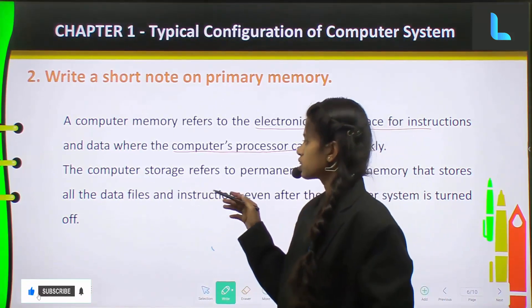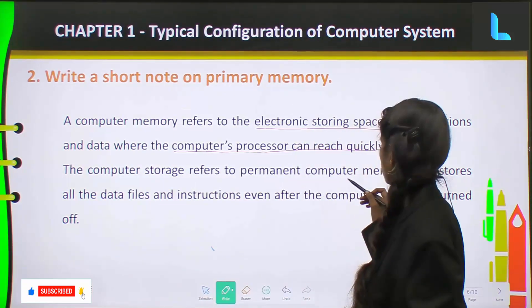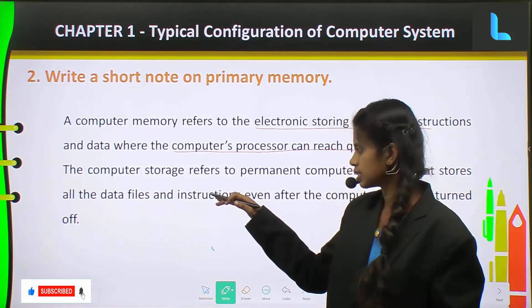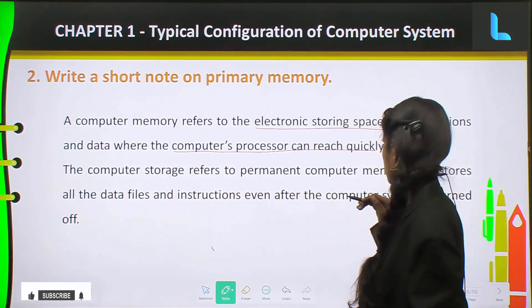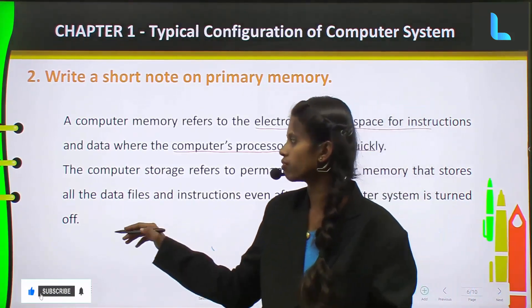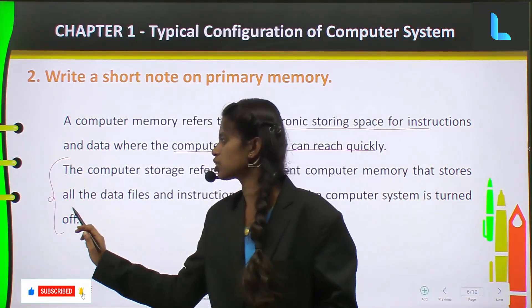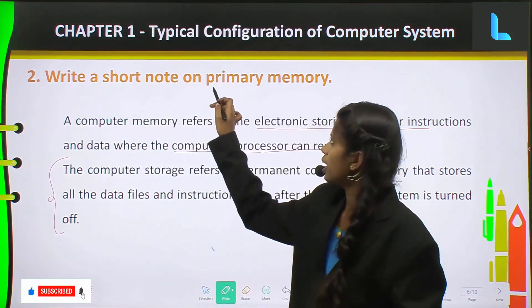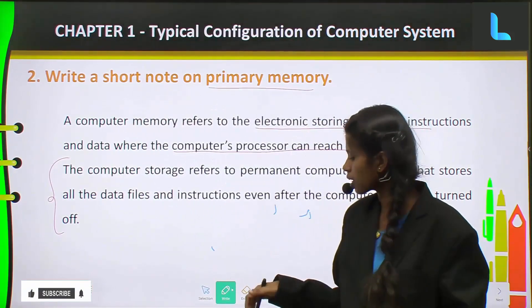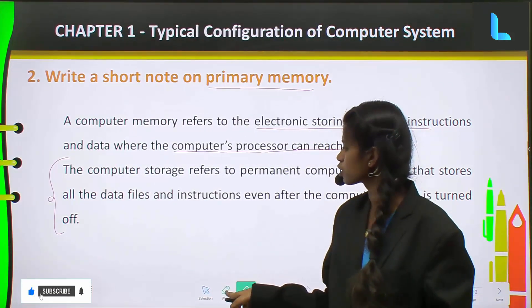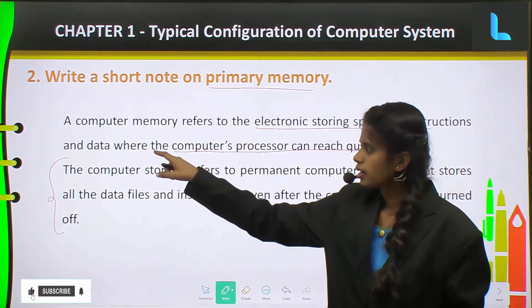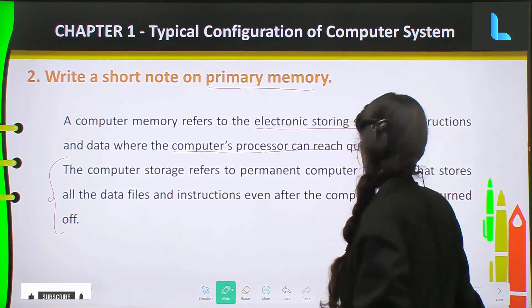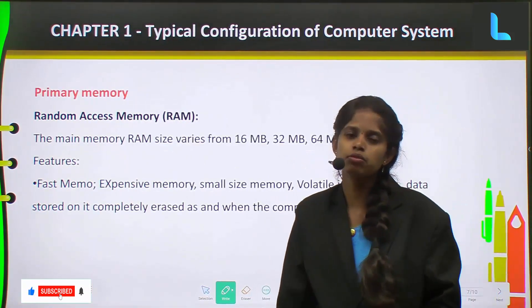Computer storage refers to permanent computer memory that stores all the data files and instructions even after the computer system is turned off. First just write what is meant by memory — these two lines will explain the memory concept. Then go on to explain the primary memory.